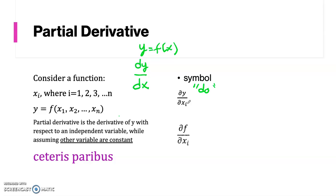Or we can write it as dou f over dou xi, or simply just fi. So let's say that we are deriving dou y over dou x1, then we write it as dou y over dou x1, assuming other variables x2 and so on constant.